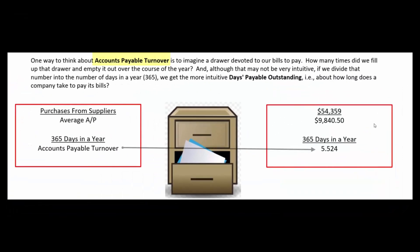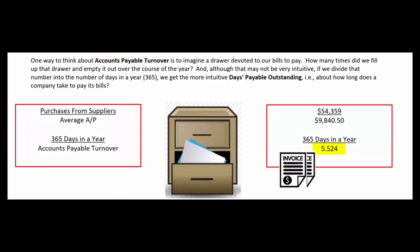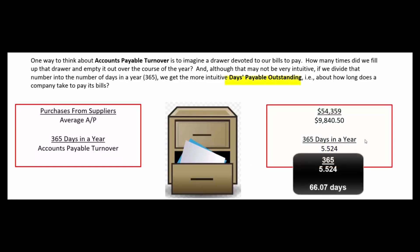That gives us an accounts payable turnover of 5.524 — in other words, we filled up this drawer and emptied it out 5.5 times during the year. When we divide 365 by that, it tells us our days payable outstanding: about how long it takes us to pay our bills. For Target, it's about 66 days.